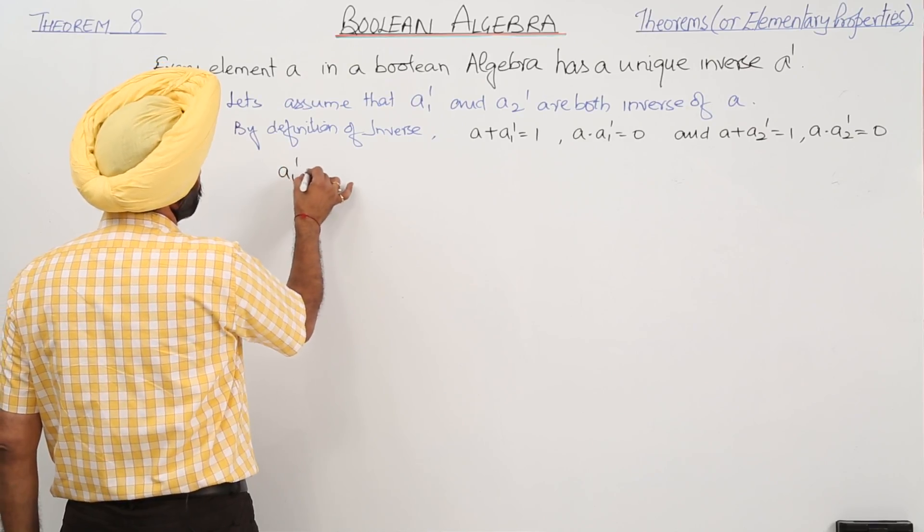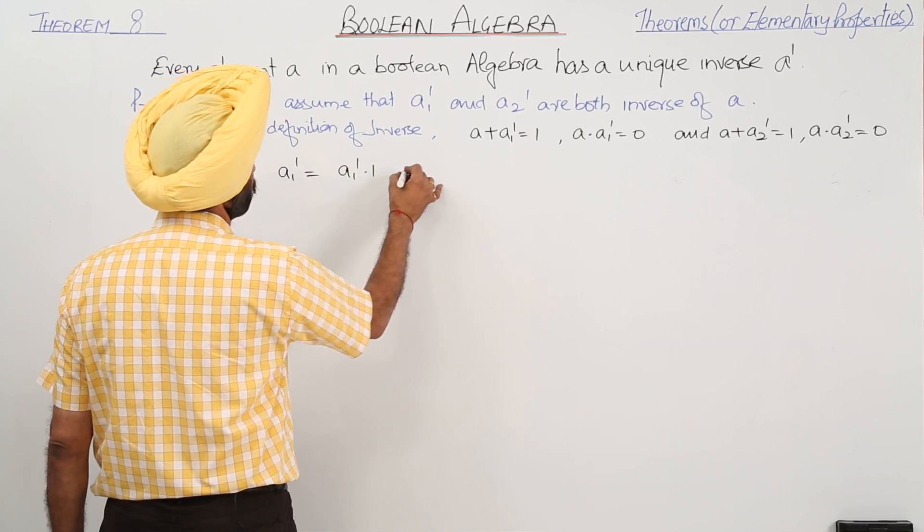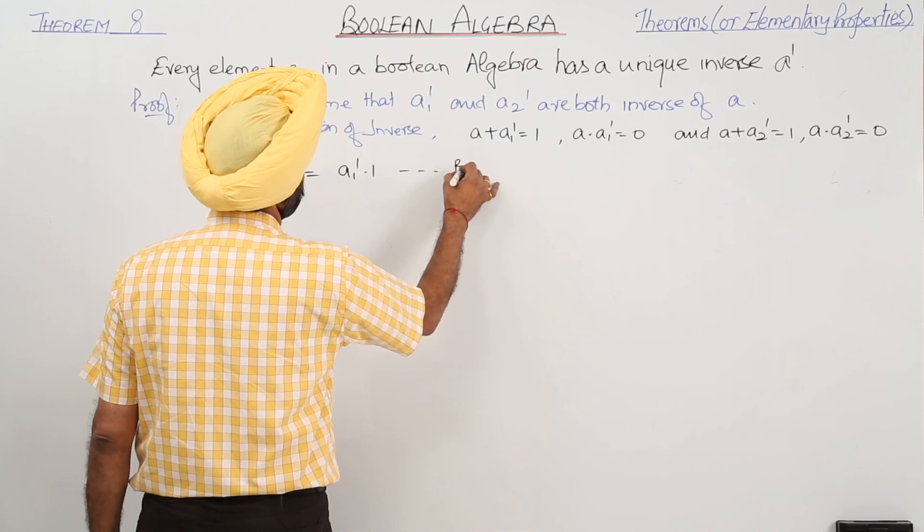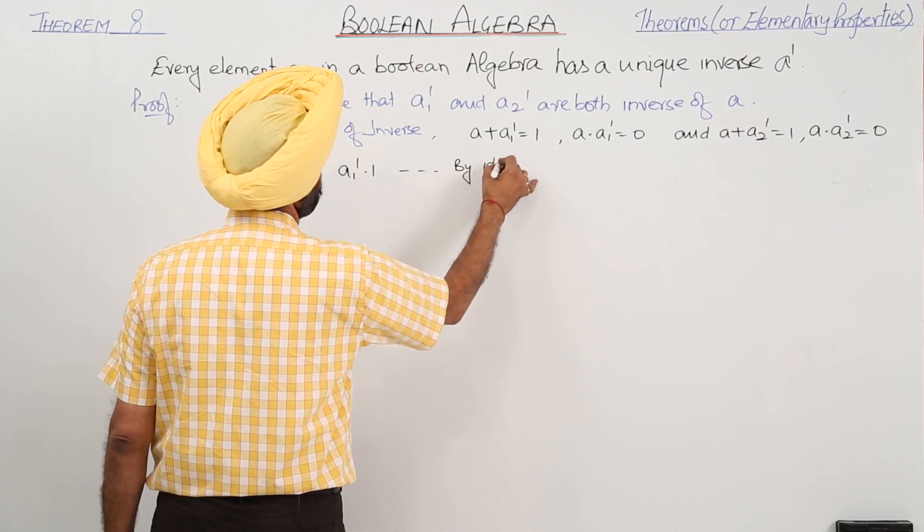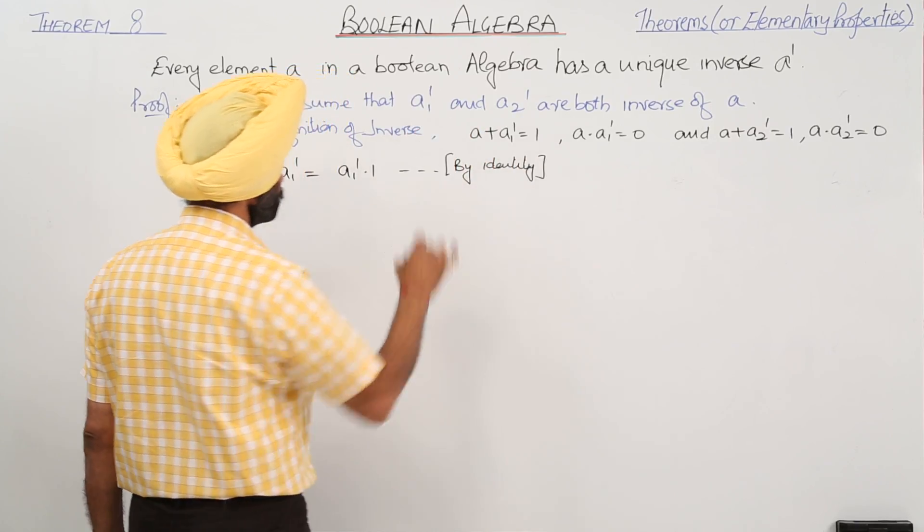A1 inverse, we can write A1 inverse as A1 inverse dot 1 by identity. First thing,